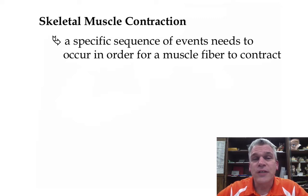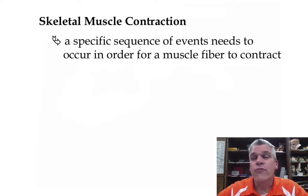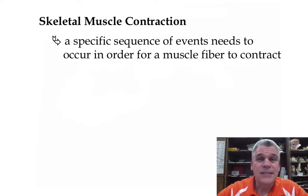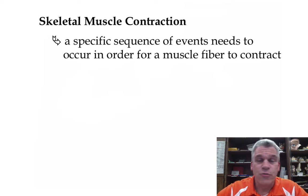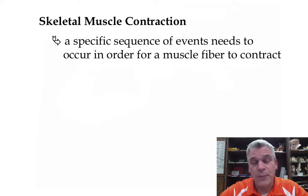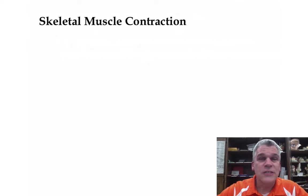A skeletal muscle contraction is a specific sequence of events needed to occur in order for a muscle fiber to contract. Step 1 has to happen before step 2, which happens before step 3, etc. If step 3 never happens, then the remaining steps won't happen either. They are all dependent on each other. Let's take a look at these steps.